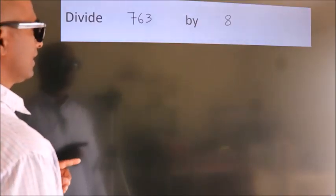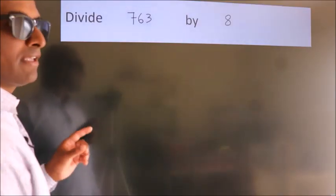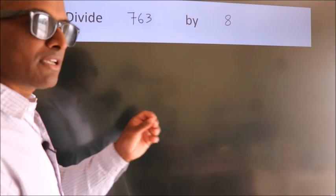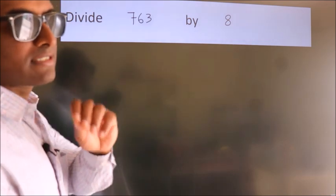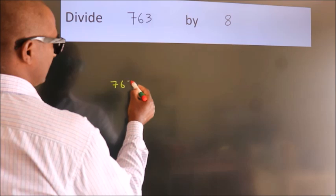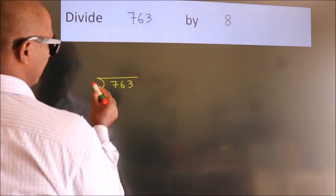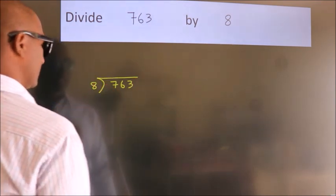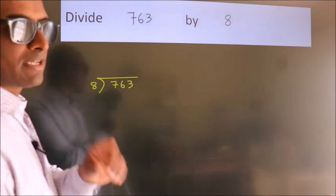Divide 763 by 8. To do this division, we should frame it in this way. 763 here, 8 here. This is your step 1.